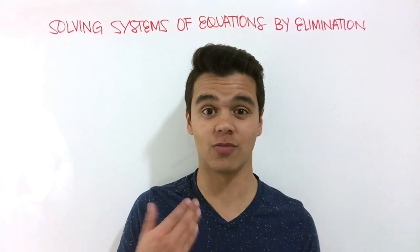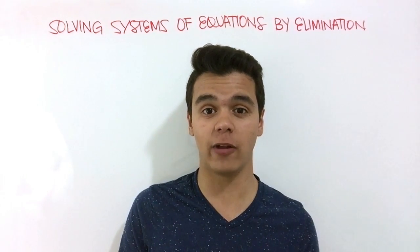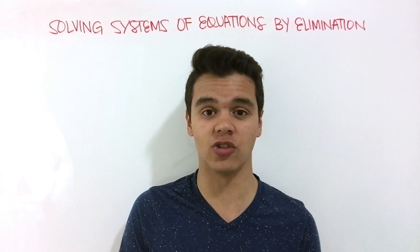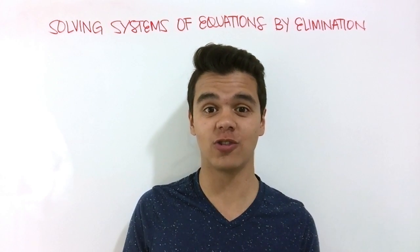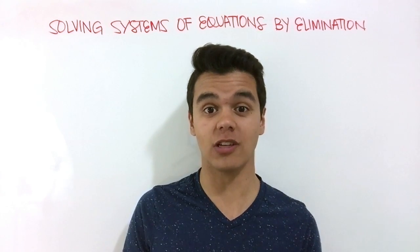To solve our system of equations by elimination, we have to replace our original system of equations by an equivalent system. So when we add both equations together, one of our variables is going to cancel out.